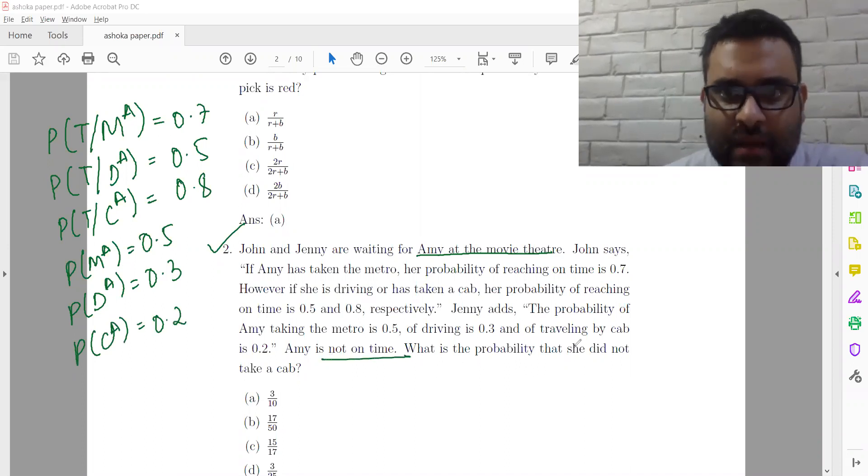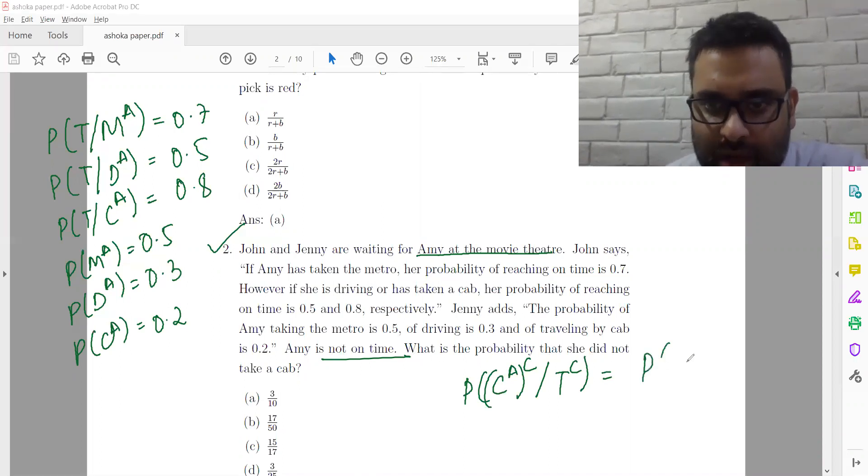So not on time, did not take the cab. So cab complement, did not take the cab given that Amy is not on time, time complement. That's basically probability Amy took either the metro, not on time or Amy took the, Amy was driving and not on time divided by probability not on time.